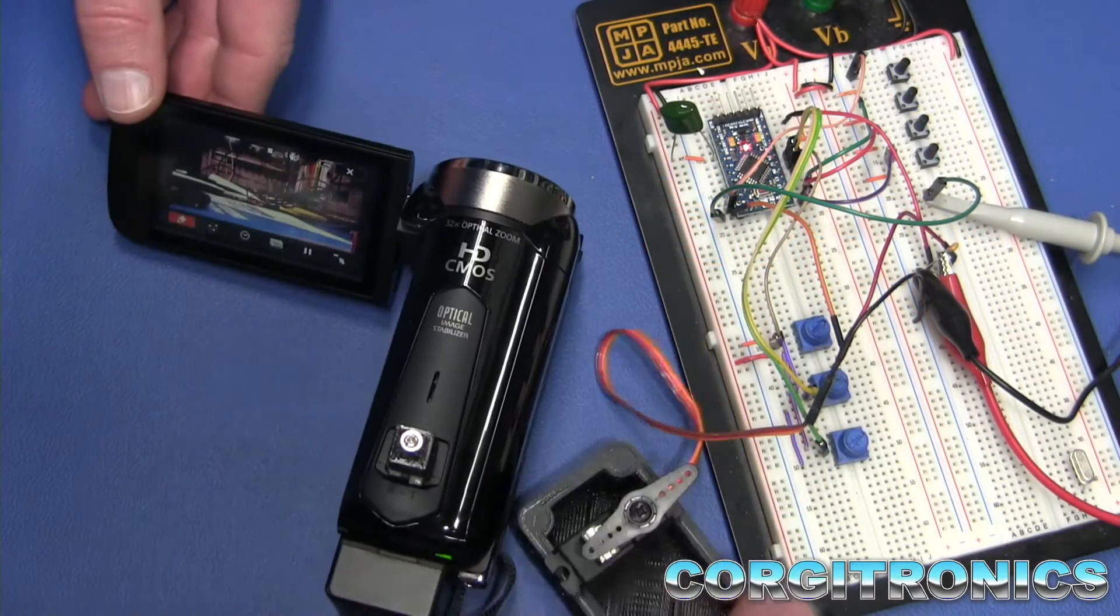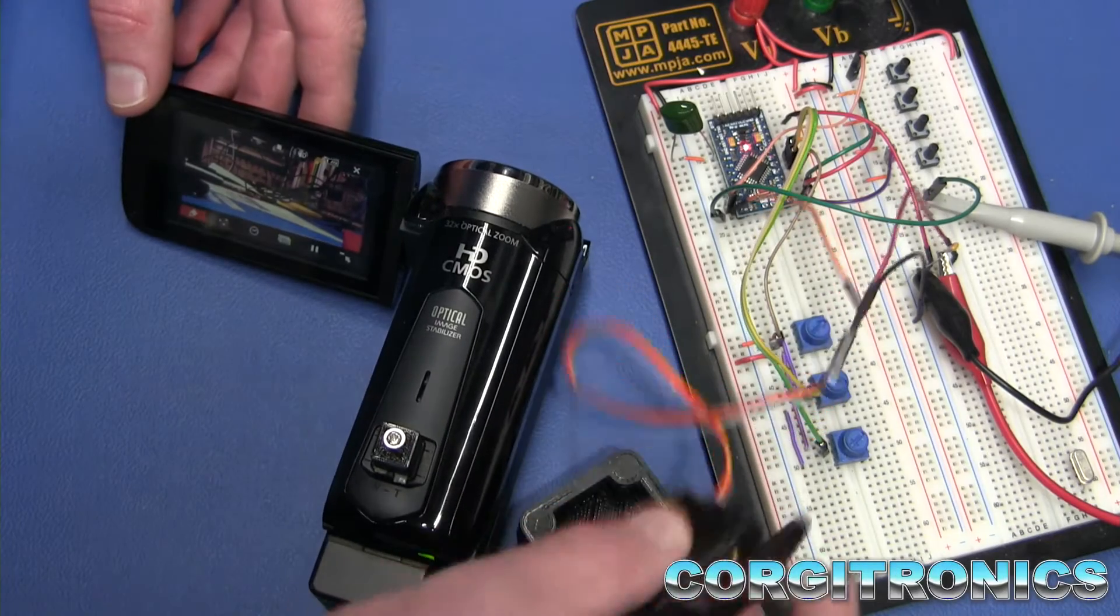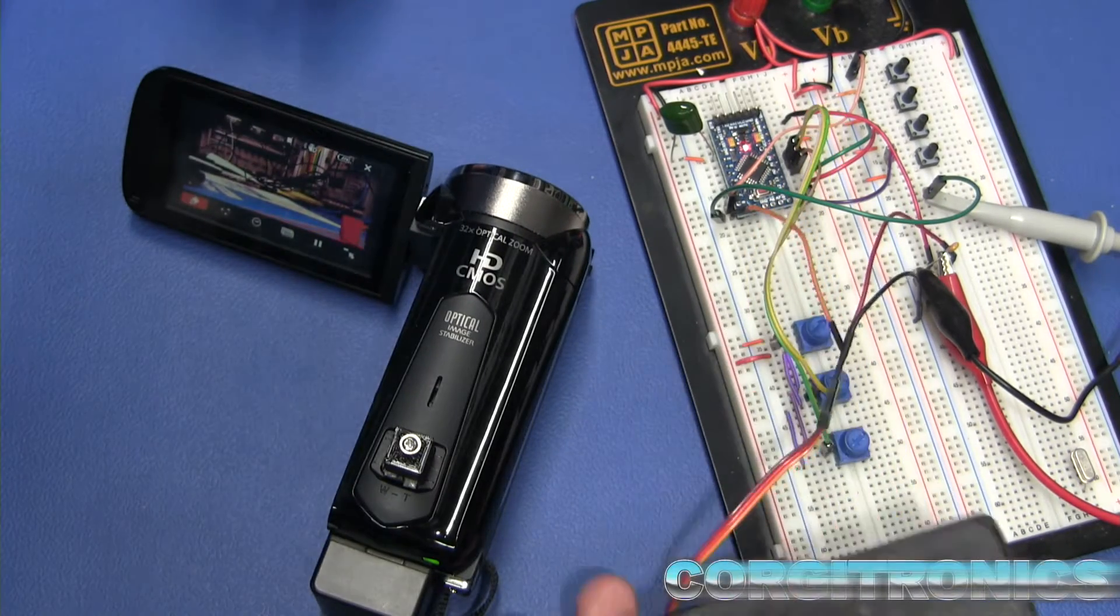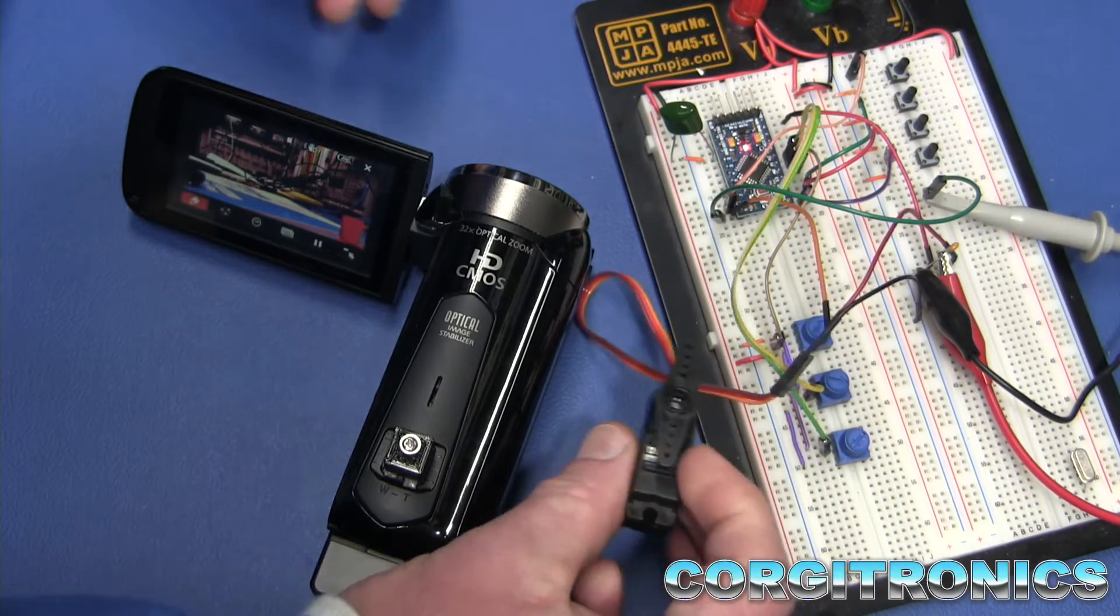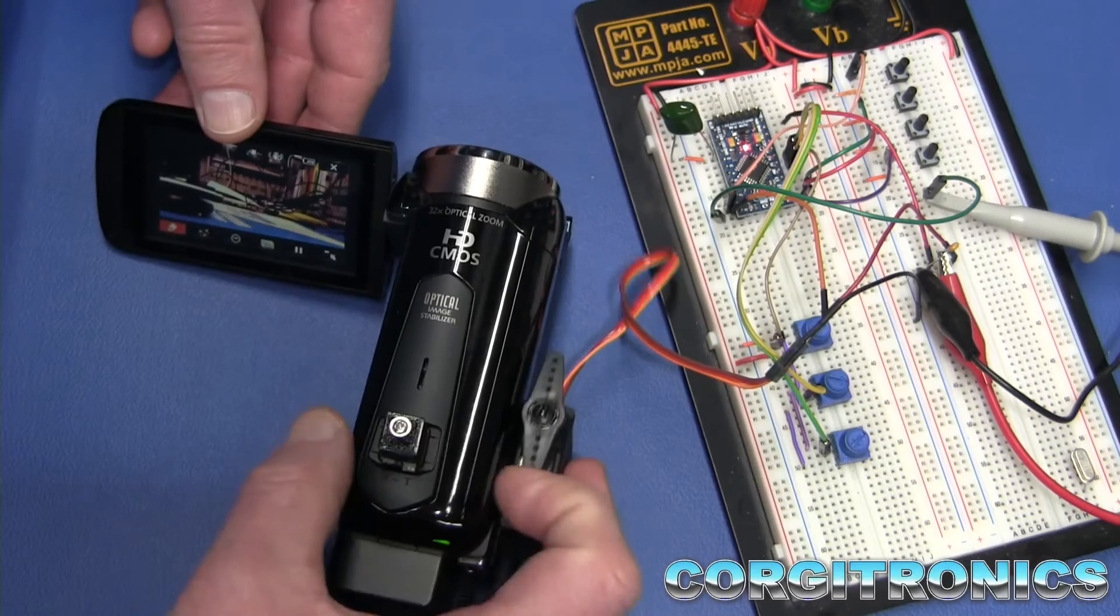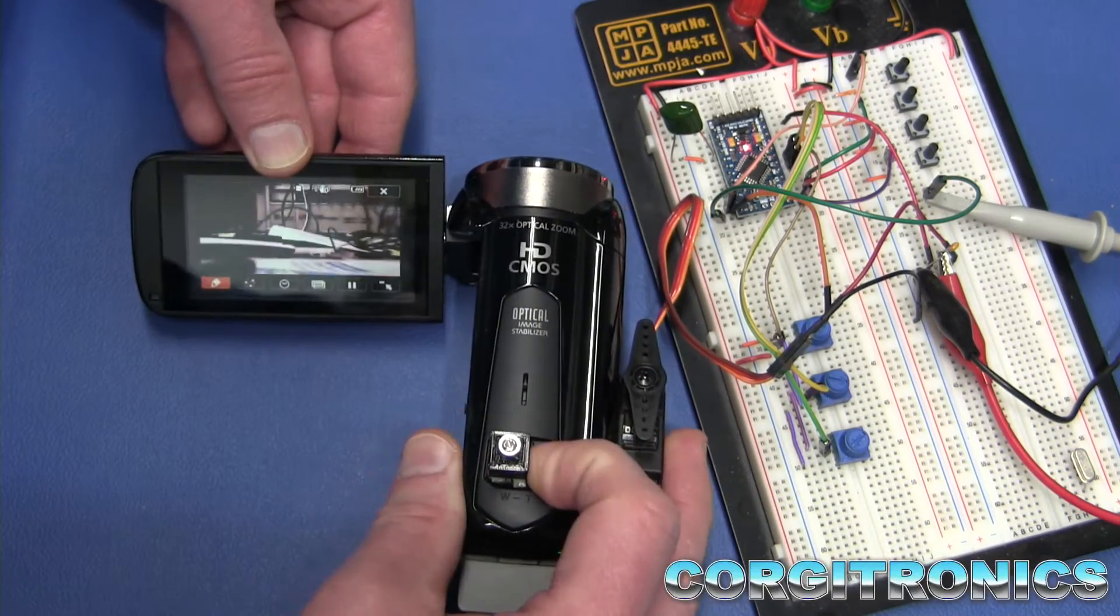So here we have the servo. That's going to be mounted on the side of the camera here. This was a little case that I printed up for the controls and that didn't work out. So we did another one. This will be mounted right here on the side. As the servo moves, it will zoom in and out quite a little bit.